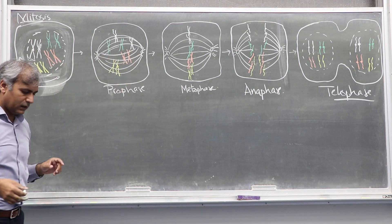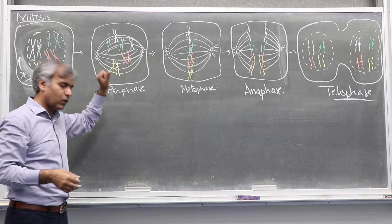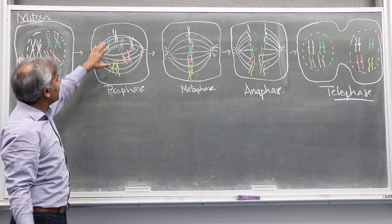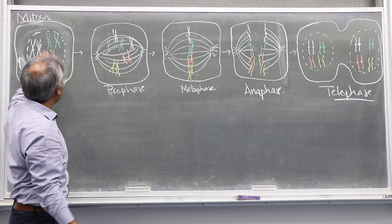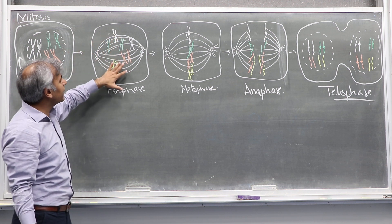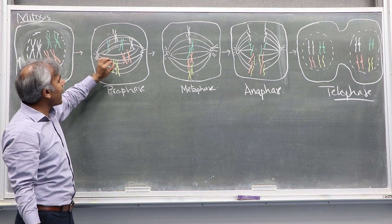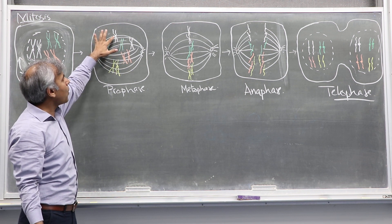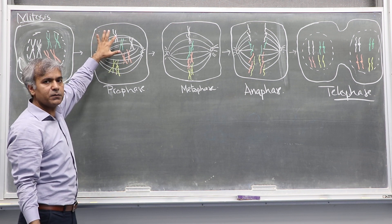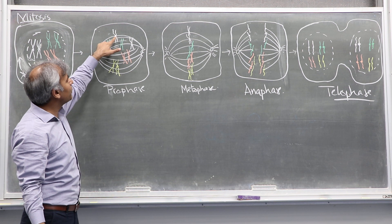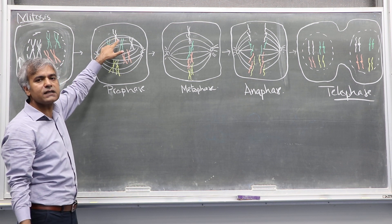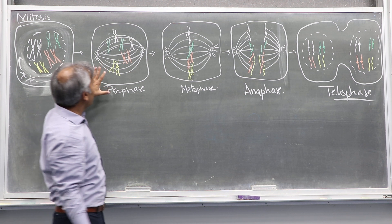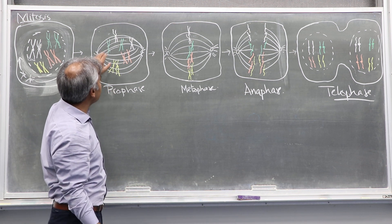These microtubules are called spindle fibers, or spindle apparatus. In this phase of prophase, all the chromosomes come and get attached to the microtubules. The point on chromosomes where a microtubule attaches physically is called the kinetochore.